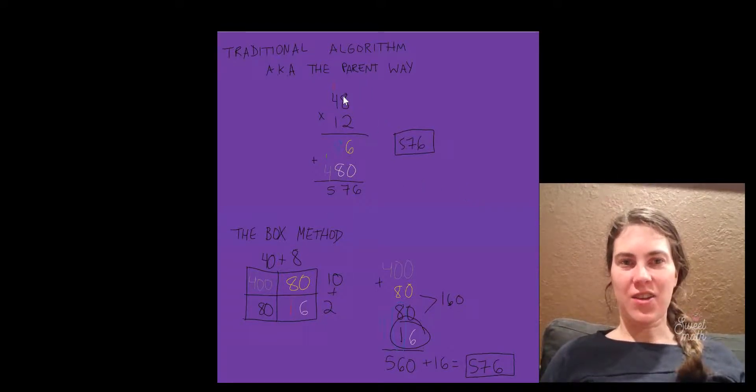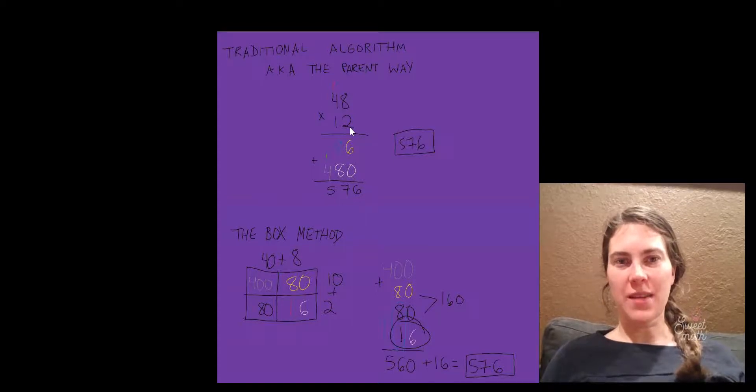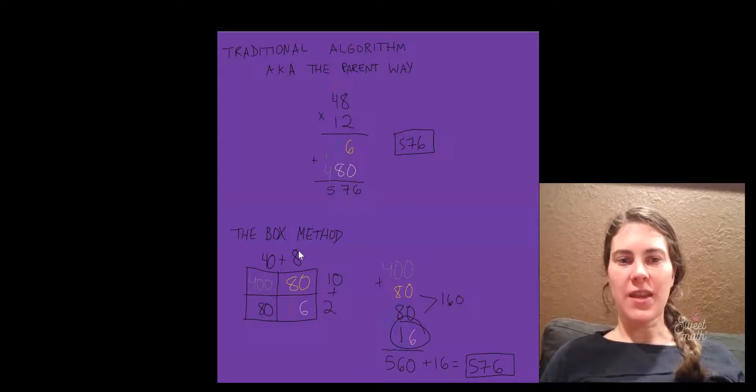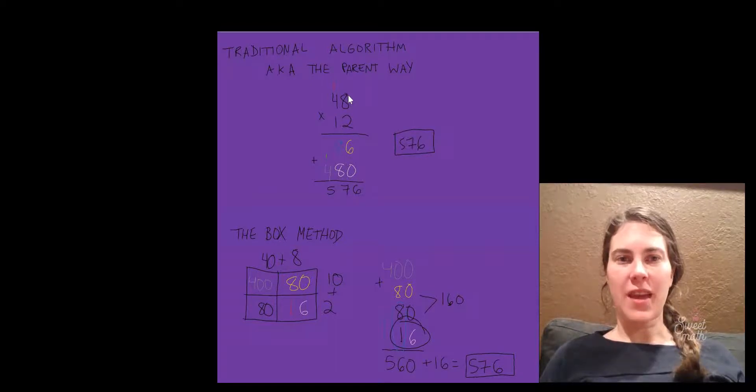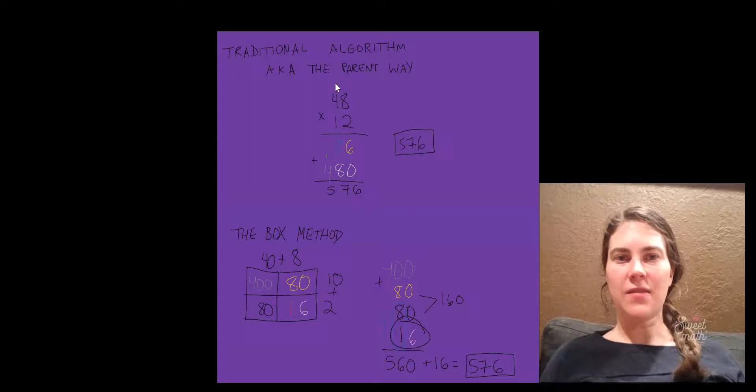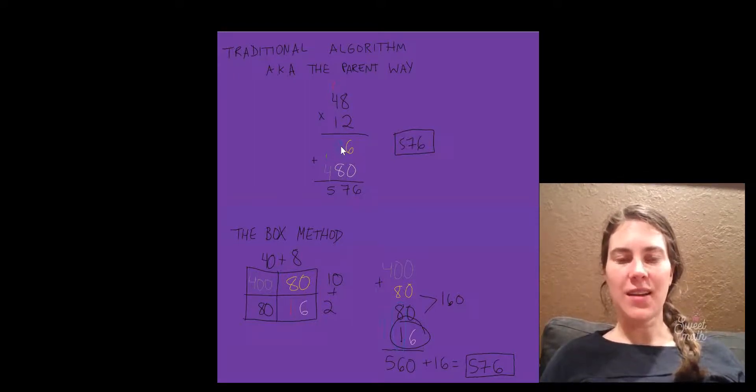In the traditional algorithm, you start with 8 times 2 is 16. Carry the 1. Over here you see 8 times 2 is 16. Back up at the traditional method, 8 times 1 is 9 because of this. So you do 8 times 1 is 8 plus the 1 is 9.